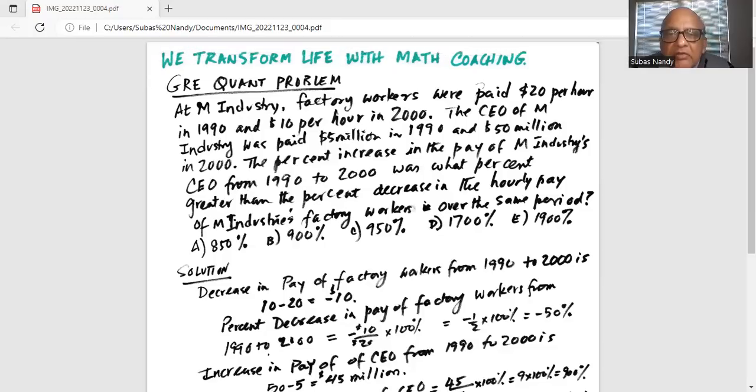At M Industry, factory workers were paid $20 per hour in 1990 and $10 per hour in 2000. The CEO of M Industry was paid $5 million in 1990 and $50 million in 2000.